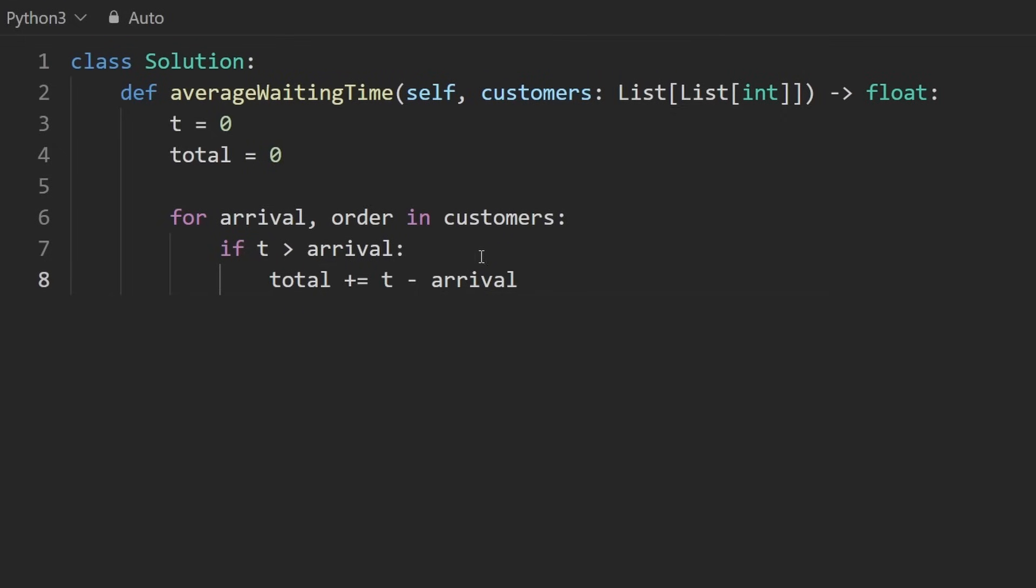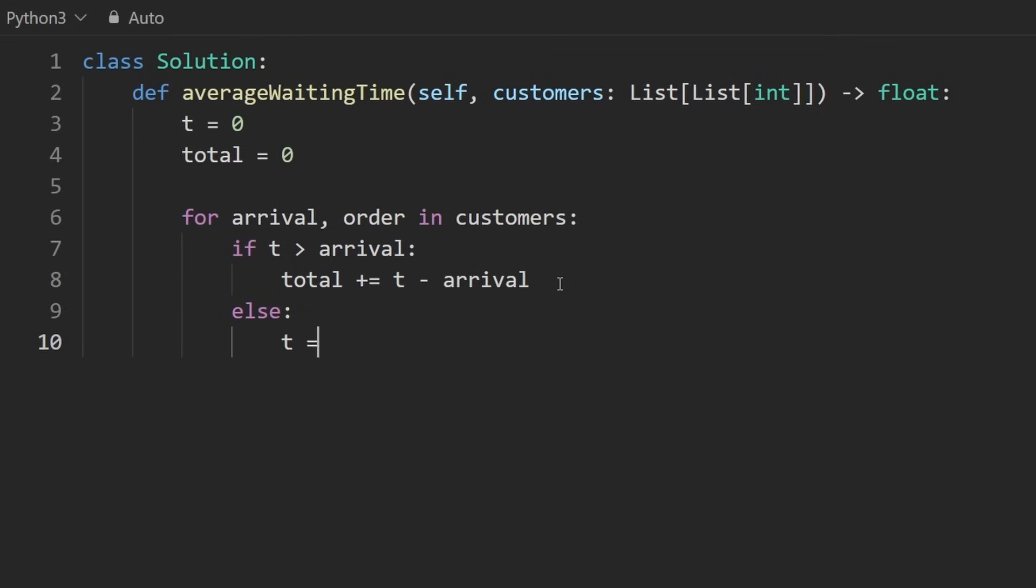So instead of keeping track of how much this person waited for, we're just adding all of that to the total because that's what we care about anyway. So adding to the total, the difference between time minus arrival. Now there's one little edge case. I guess I technically didn't go over in the drawing explanation. We initialize our time to zero, but remember the first customer actually arrived at time equals one. So right now for the first customer, it's actually time equals one, but our variable is set to time equals zero. Well, the way we get around that is if the time is greater than the arrival time, the time will stay the same. We'll just add the difference to the total. But if the time is less than the arrival time or even equal, technically we could do something like this. We could say the time is now equal to the arrival time. Basically we're fast forwarding.